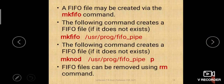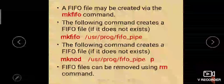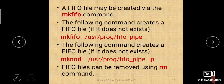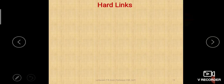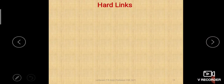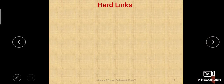FIFO files can be removed using the rm command, just like any other file. Regular files and device files you can remove through rm, but directory files you cannot remove through rm — you have to use rmdir to remove a directory. Other files, including FIFO files, can be removed through the rm command. When we start system programming we will see how to create these files in the program.